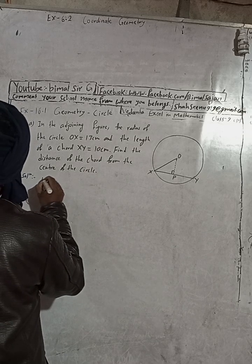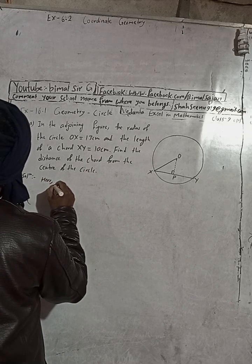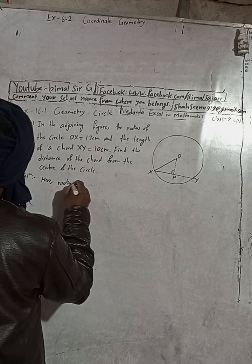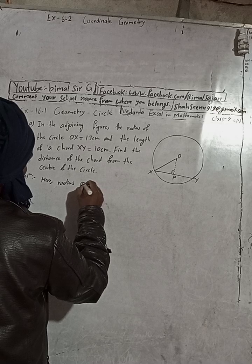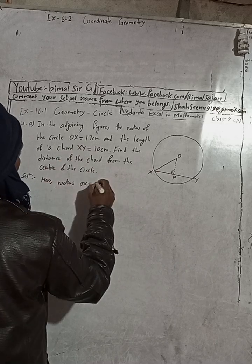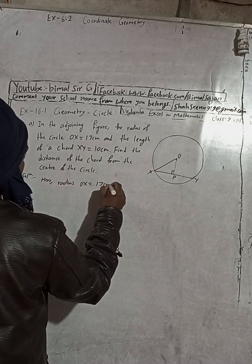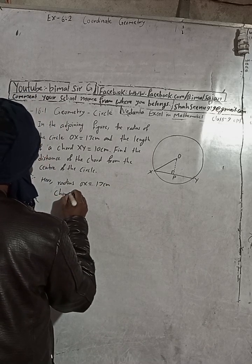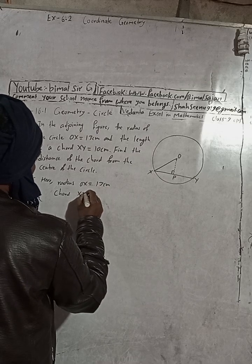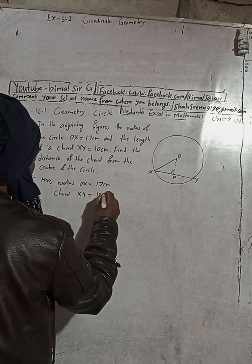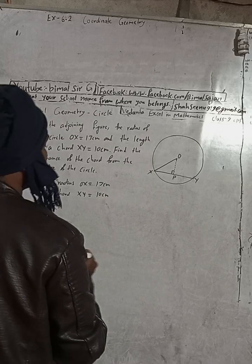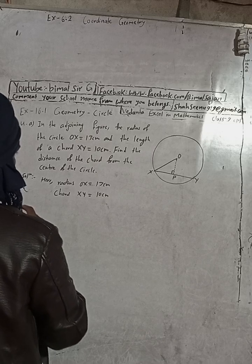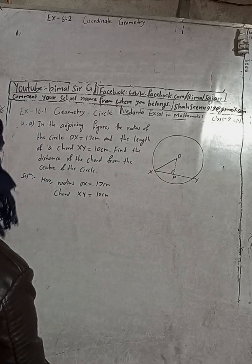So here, the radius of the circle OX is equal to 13 cm, and the chord XY is given as 10 cm. The radius OX is given and the chord XY is given.